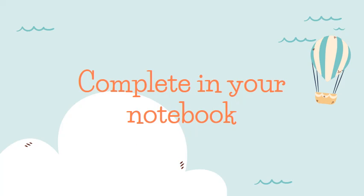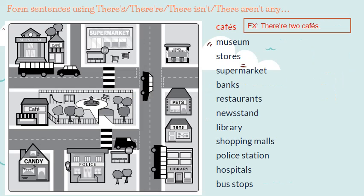So last class, we learned how to form sentences in the affirmative and negative, singular and plural, talking about places in the city. So now, I want you to get your notebooks, because you're going to write sentences for me by looking at a map. For this activity, you're going to do it in your English notebook. I want you to form sentences using there is, there are, there isn't, or there aren't any. Let's look at the example.